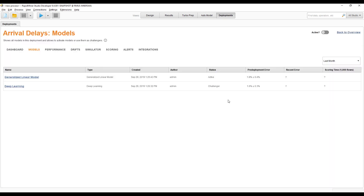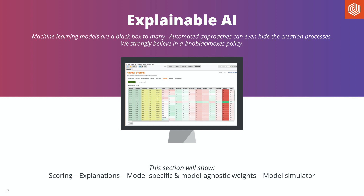When we talk about scoring, we also need to talk about how to explain the predictions a machine learning model is making. For some models like decision trees, you can follow along easily, but for most — especially the more powerful ones — you really can't. The topic of explainable AI became really important, and at RapidMiner we believe in a complete no-black-boxes policy. That means both for how models were generated and for the predictions they create.